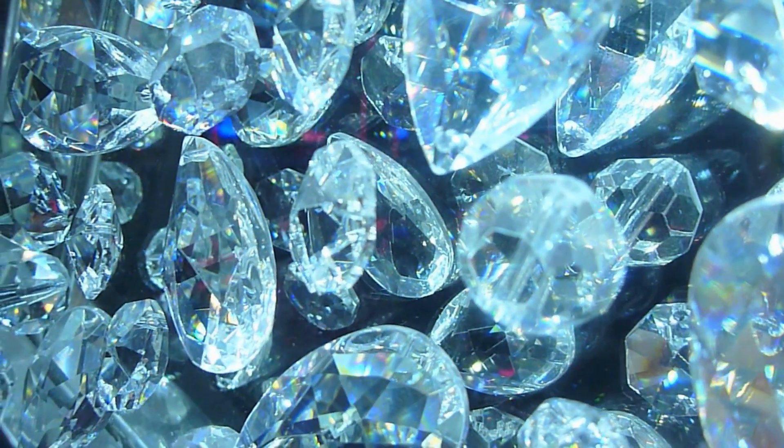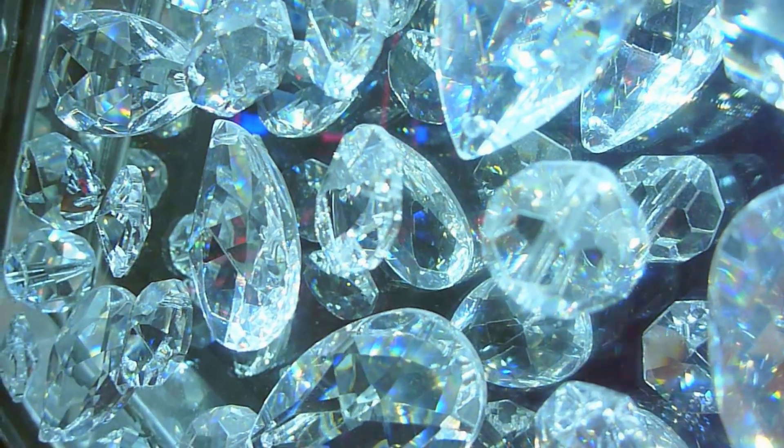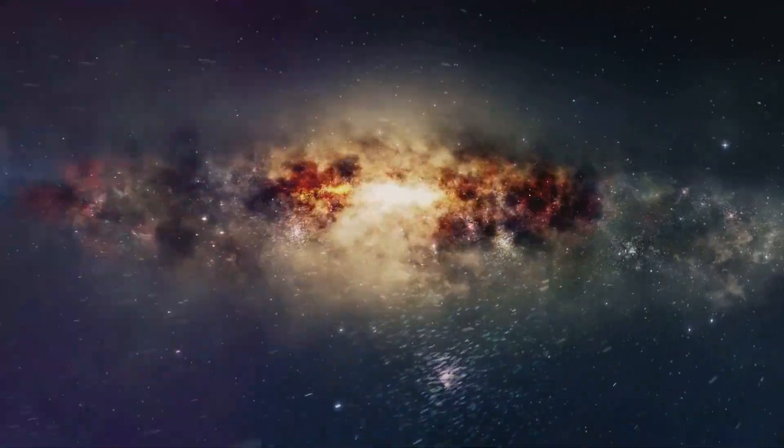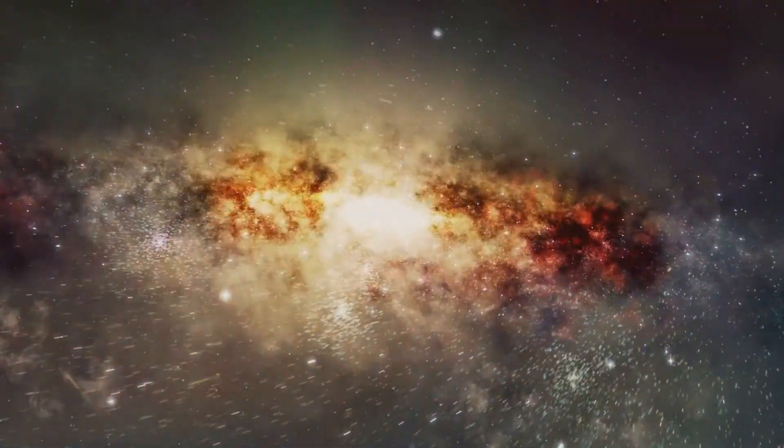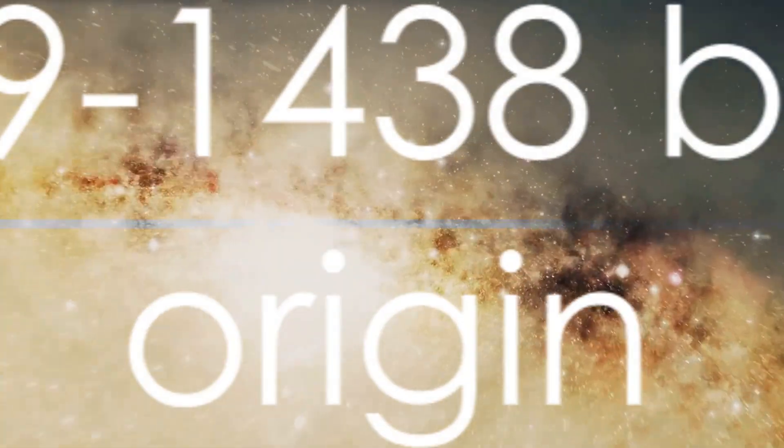Imagine a body that's primarily carbon and oxygen, condensed under such extreme pressure that it crystallizes into diamond. It's like a cosmic treasure chest, glittering in the far reaches of the universe. But what makes this planet truly extreme is its origin.